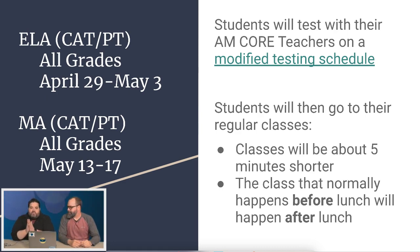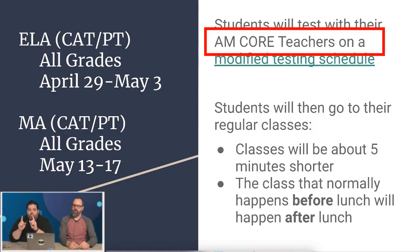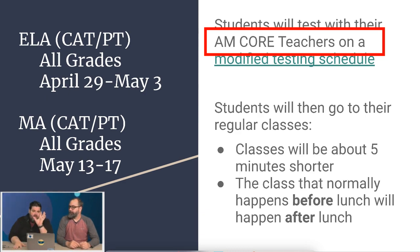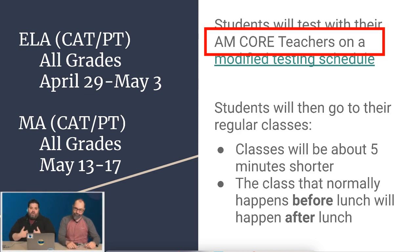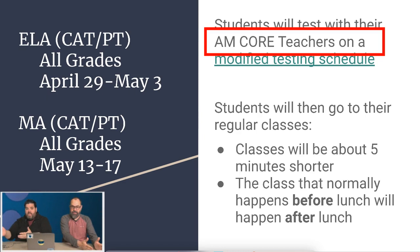The number one question I got: when are we doing this testing? You're going to be testing with your AM core class. For sixth and eighth graders, that's first period. You'll be sitting in a room with your first period class. For seventh grade, that's going to be your third period class, so in the morning you'll go straight to your third period class. If you have Mr. Sperry third period, you go to Mr. Sperry at 8:15. This has a modified schedule to it, so we're going to show you that schedule right now.